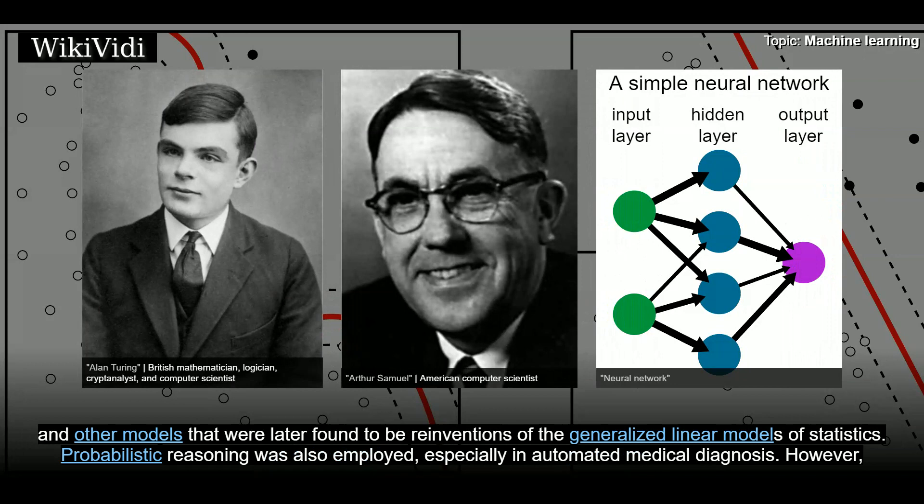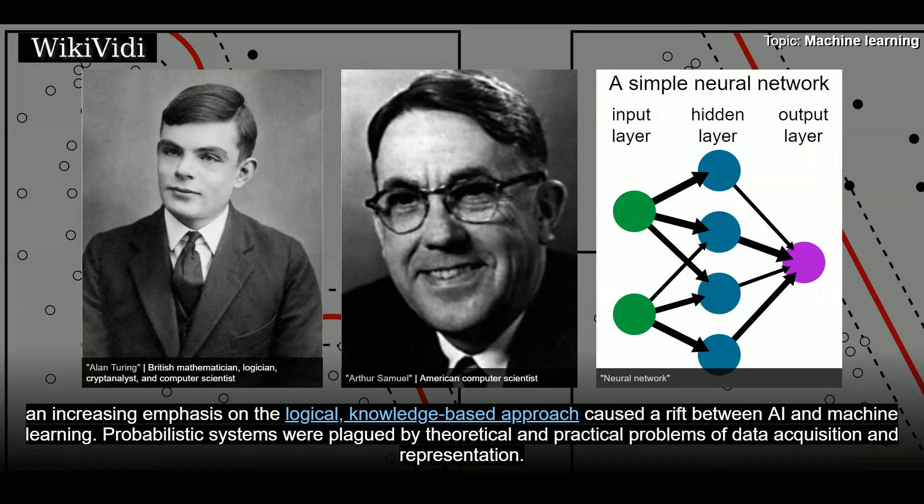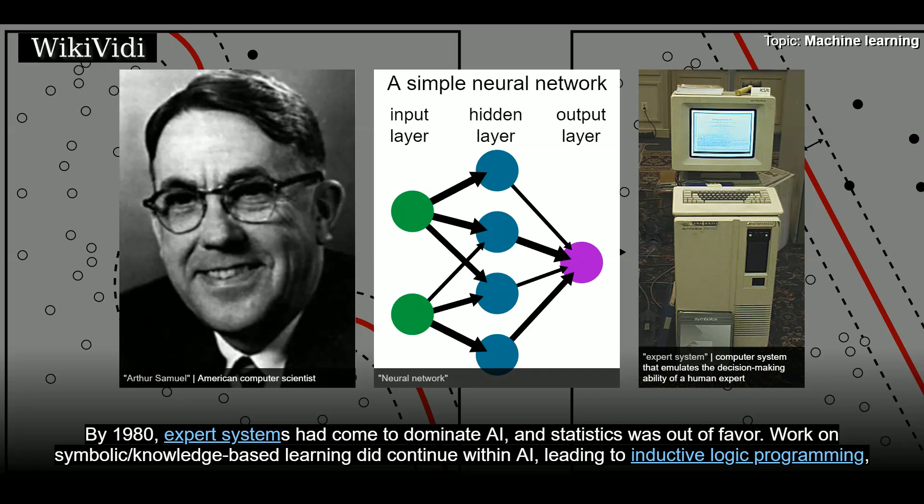Probabilistic reasoning was also employed, especially in automated medical diagnosis. However, an increasing emphasis on the logical, knowledge-based approach caused a rift between AI and machine learning. Probabilistic systems were plagued by theoretical and practical problems of data acquisition and representation. By 1980, expert systems had come to dominate AI, and statistics was out of favor. Work on symbolic/knowledge-based learning did continue within AI, leading to inductive logic programming.